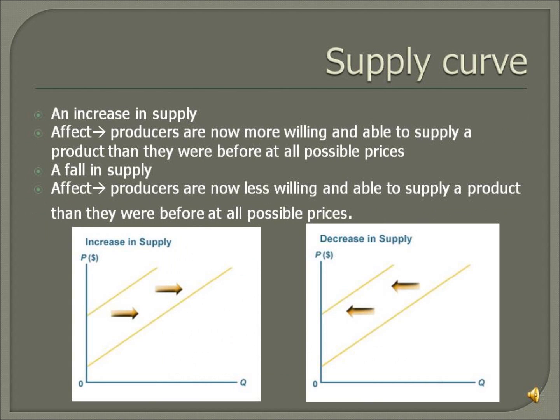An increase in supply — in effect, producers are now more willing and able to supply a product than they were before at all possible prices. A fall in supply — in effect, producers are now less willing and able to supply a product than they were before at all possible prices.